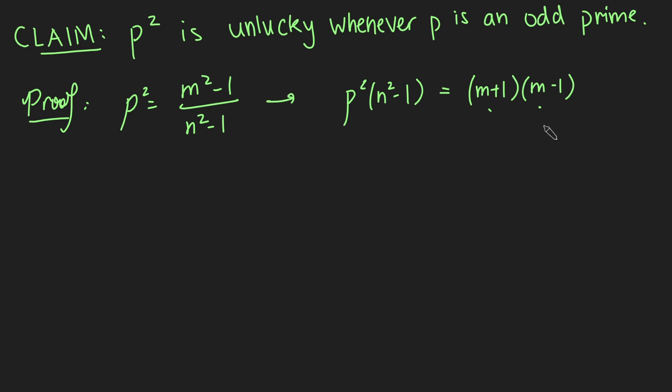In particular, it must be exactly one of them is a multiple of p, because both of them can't be. Let's see why. If both of them were multiples of p, let's say that this was k times p, and this was l times p. If I did kp minus lp, that would equal m plus 1 minus m minus 1, which is just 2.